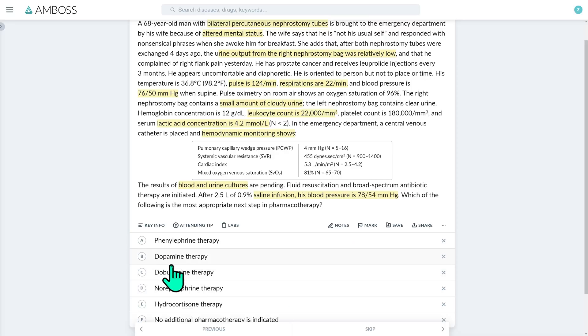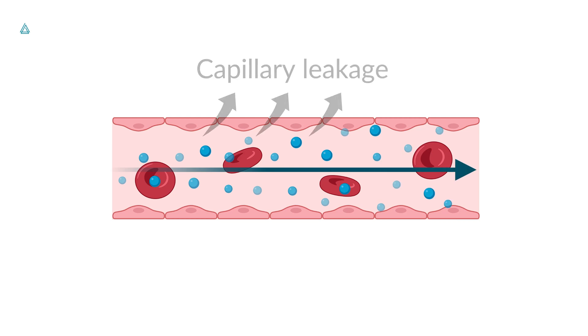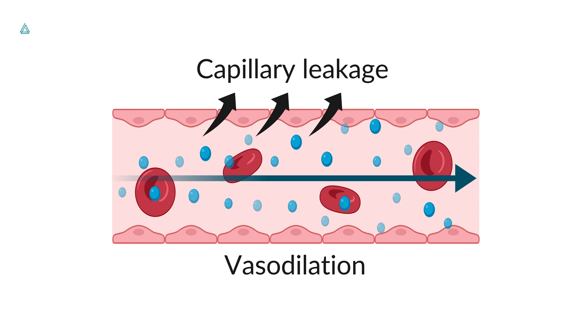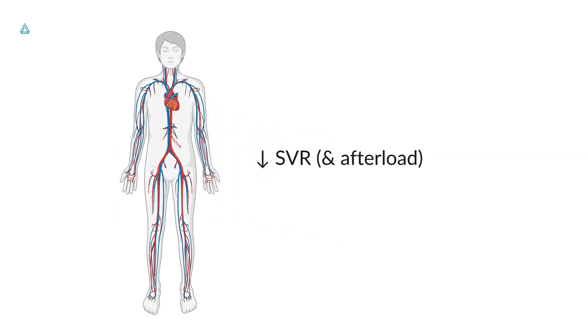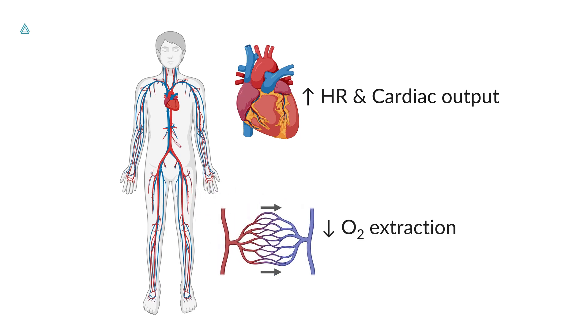Let's put on our thinking caps and answer the question. For this patient with septic shock and persistent hypotension despite initial fluid treatment, what drug should we administer to raise blood pressure? Norepinephrine is correct. In septic shock, circulating bacterial toxins and cytokines cause capillary leakage and vasodilation, which leads to a decrease in both SVR (afterload) and PCWP (preload). The body compensates by increasing heart rate and cardiac output. Peripheral microcirculatory shunting leads to lower oxygen extraction, resulting in elevated mixed venous oxygen saturation.